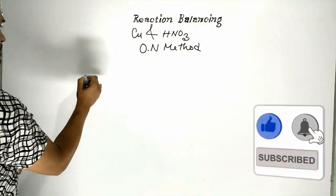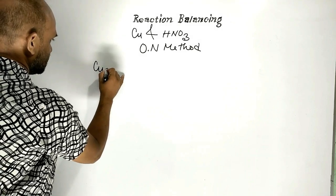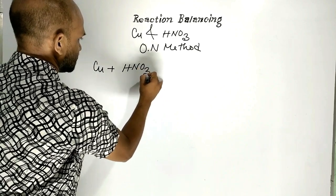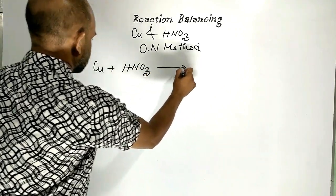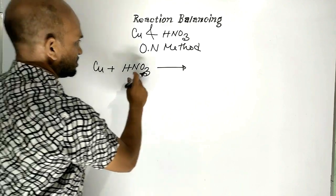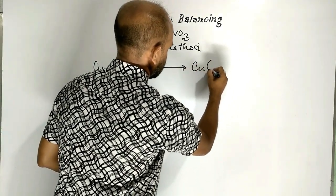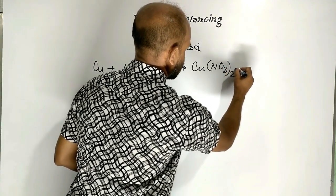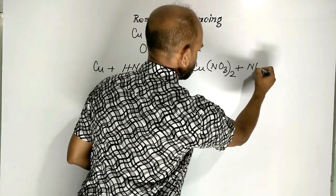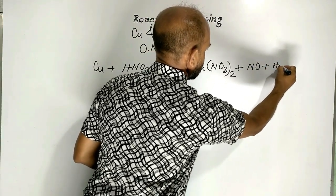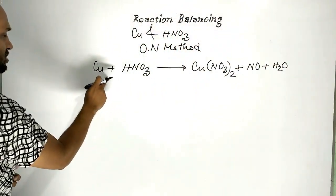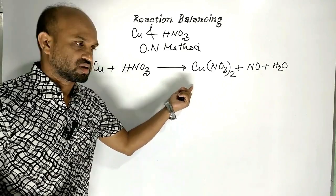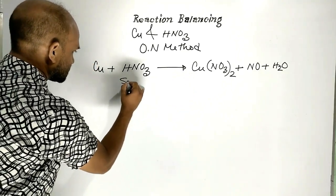First of all, let us write the reaction between copper and nitric acid. Copper reacts with nitric acid, and the products formed are copper nitrate, nitric oxide, and water. This is the reaction — not yet balanced. We can call this the skeleton of the reaction.